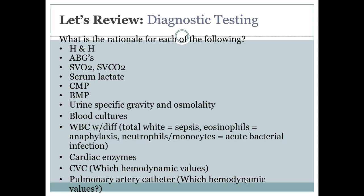Cardiac enzymes are monitored in cardiogenic shock. With a CVC, we can monitor SCVO2. A pulmonary artery catheter allows us to measure pulmonary artery pressure for monitoring pulmonary hypertension, PAOP or PAWP for left heart preload, and draw SVO2 samples giving us mixed venous oxygen saturation.